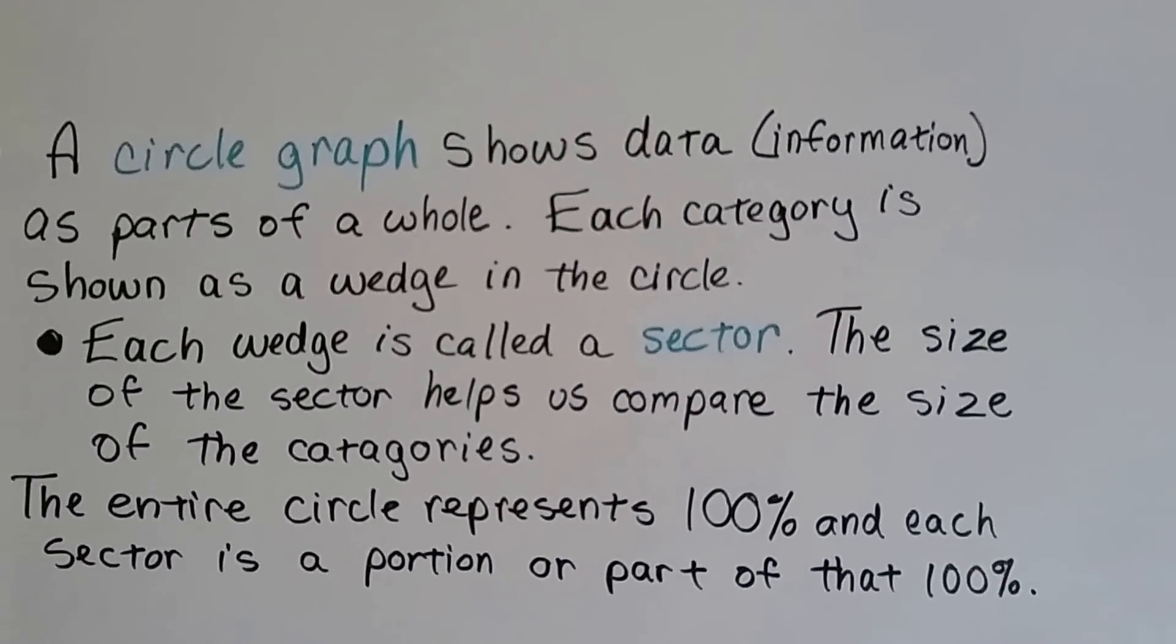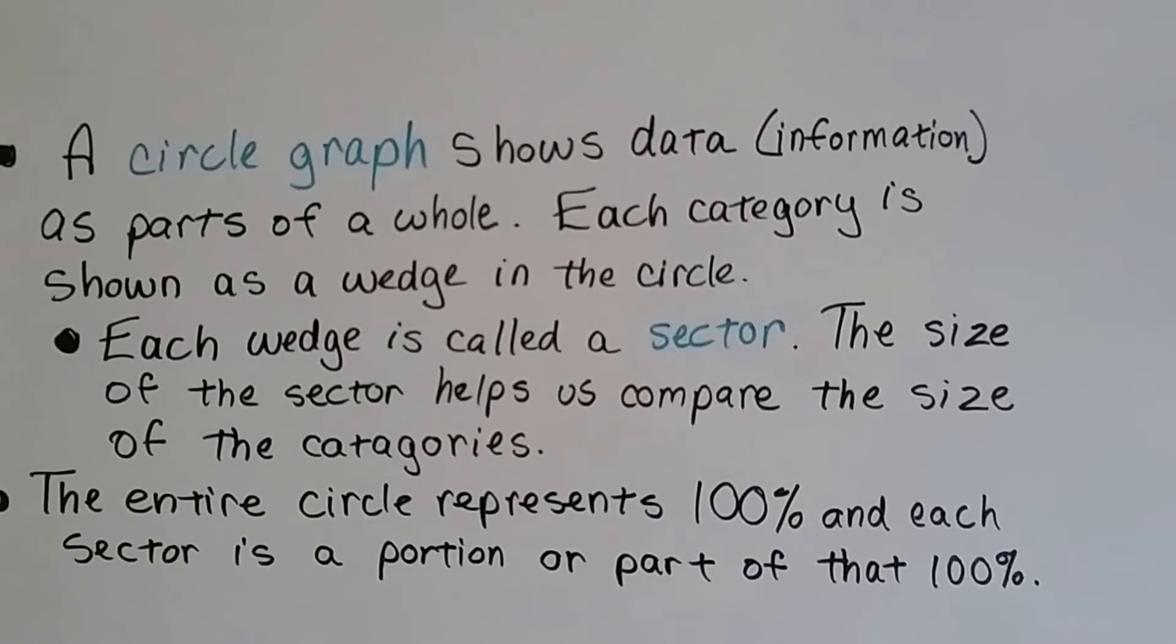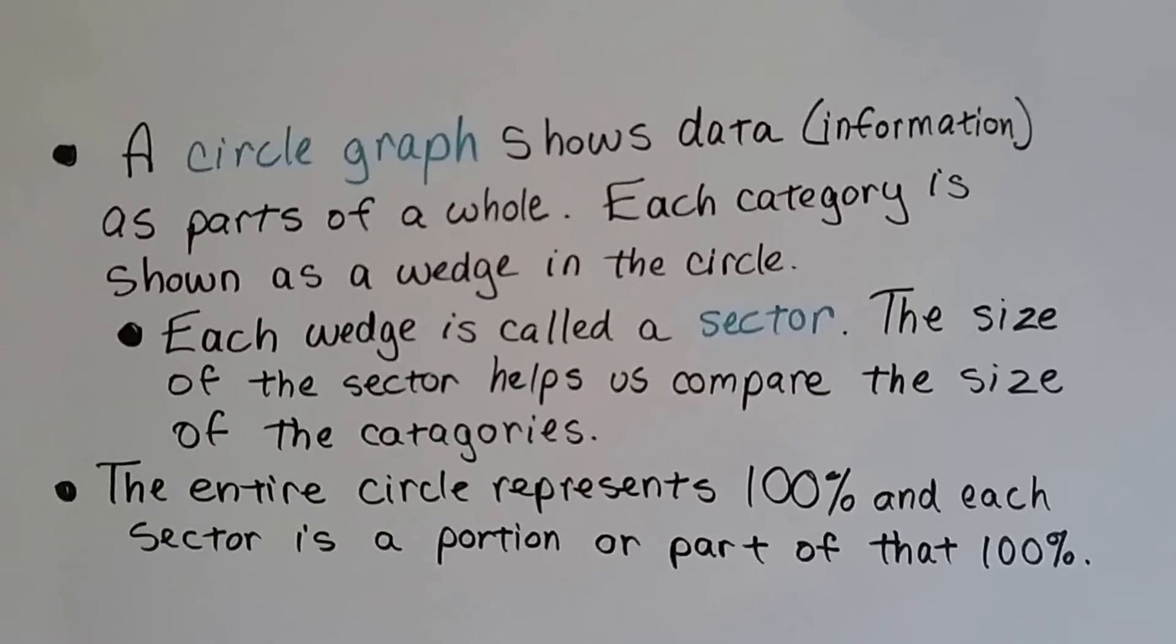Each category is shown as a wedge in the circle. Each wedge is called a sector, and the size of the sector helps us compare the size of the categories.